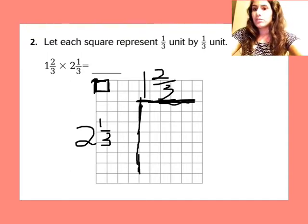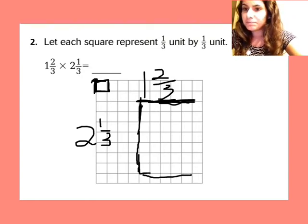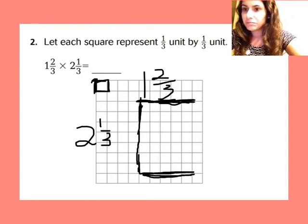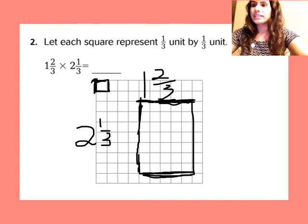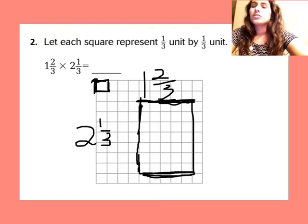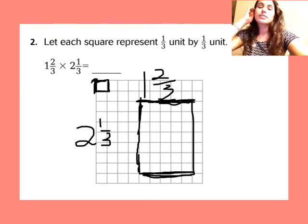So now I have two and one-third, and then I can connect it and I have a rectangle so that I can find the area of. So now I'm basically doing one and two-thirds times two and one-thirds.